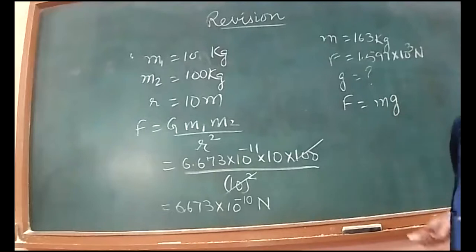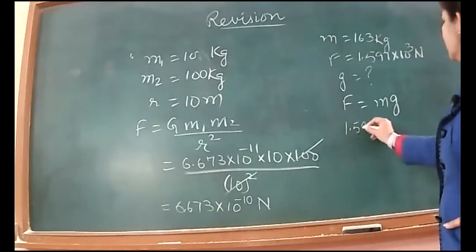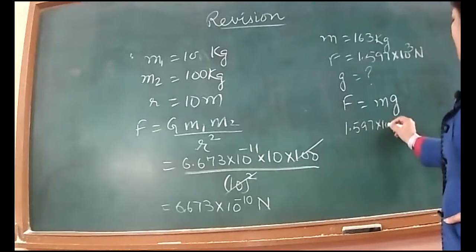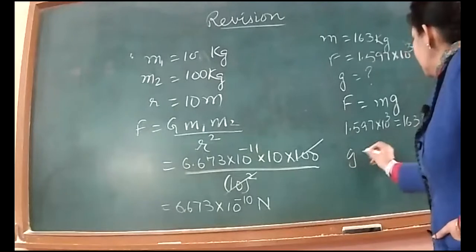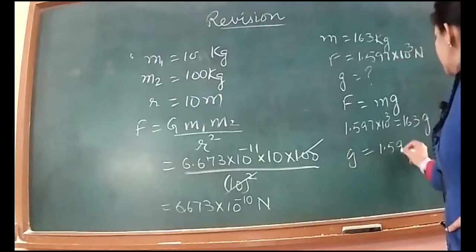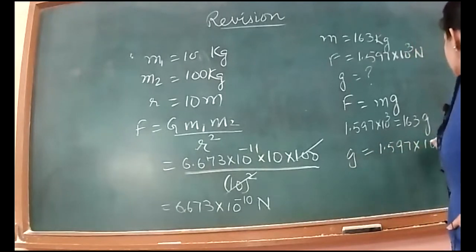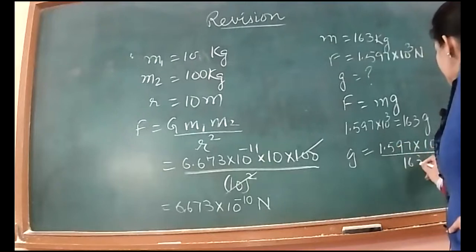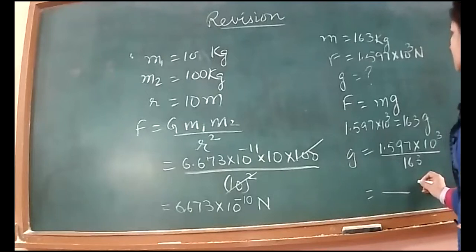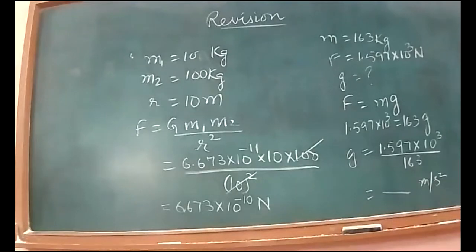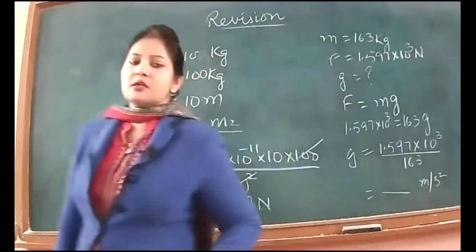So use F is equal to MG because F is the weight here. Weight is given, mass is also given, then find G from here. So G would be 1.597 into 10 raised to power 3 upon 163. So solve this and see what is the answer. It will be in meter per second square because this is acceleration. All of you solve this now and tell me what your answer is going to be.